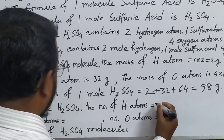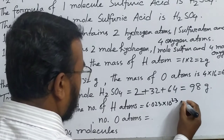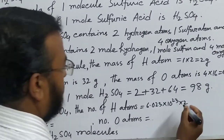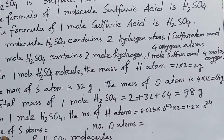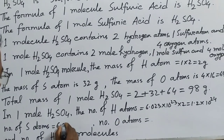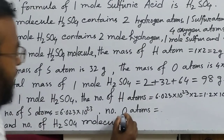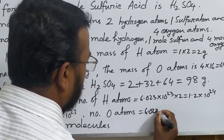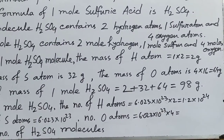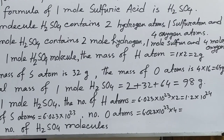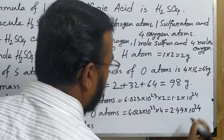In 1 mole of sulfuric acid, the number of hydrogen atoms is 6.023 × 10²³ × 2, which gives 1.2 × 10²⁴ atoms. The number of sulfur atoms is 6.023 × 10²³ × 1. The number of oxygen atoms is 6.023 × 10²³ × 4, which gives 2.49 × 10²⁴ atoms.